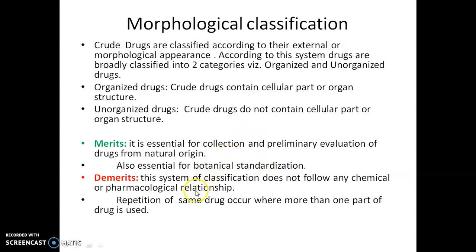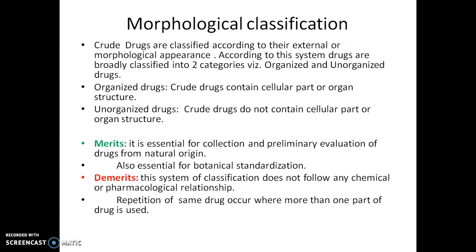The demerits are that in some cases more than one part is responsible for therapeutic activity. For example, in the neem plant, the leaves are an essential source of medicine or active ingredients, the seeds also have pesticidal activity, and the bark is also important. This causes repetition of the same drug where more than one part is used. Also, this classification does not follow any chemical or pharmacological relationship.